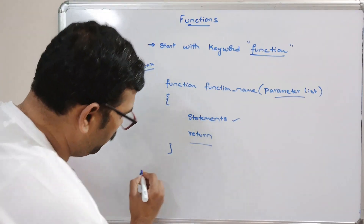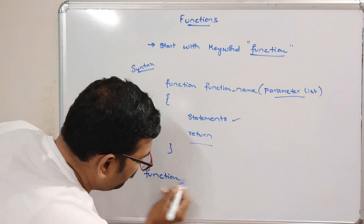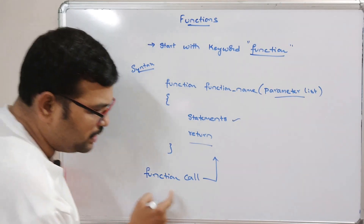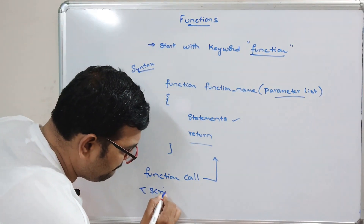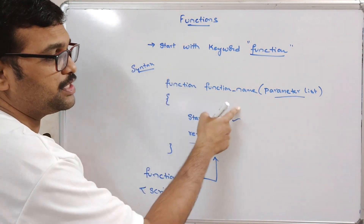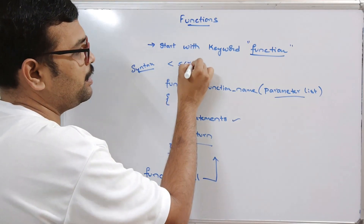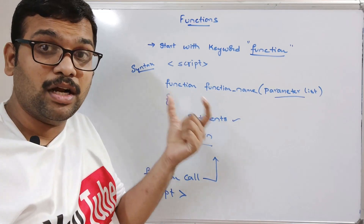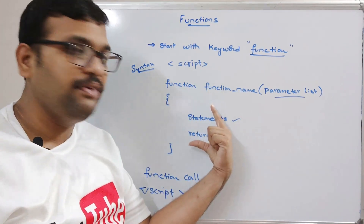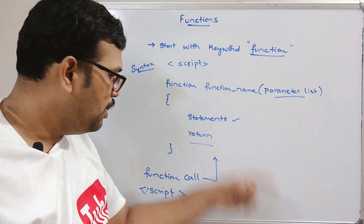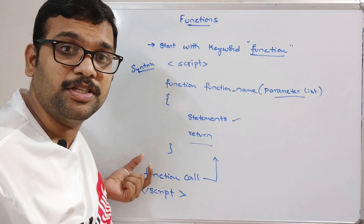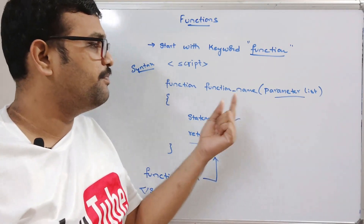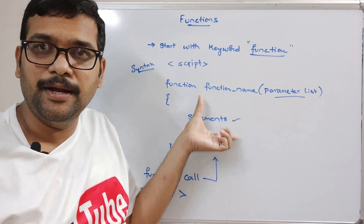This function will be executed whenever there is a function call. Immediately upon a function call, the function definition will be executed. The function call and the function definition should both be written inside the script tag. Whenever the control finds the 'function' keyword, it knows this is a user-defined function that should only execute when the function call is reached.